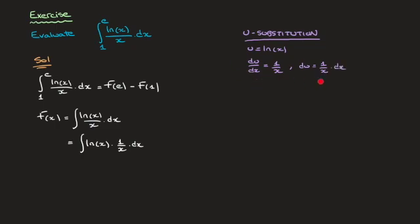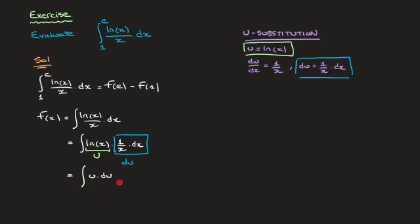Now, using these results, we can rewrite our integral in terms of the new variable u. Using the fact that u is equal to ln of x, we can replace ln of x here by u. And using the fact that du equals to 1 over x dx, we can replace this inside our integral by du. This quickly turns into the integral of u du. Here we can see quite clearly that we've successfully changed the variable from x to u.